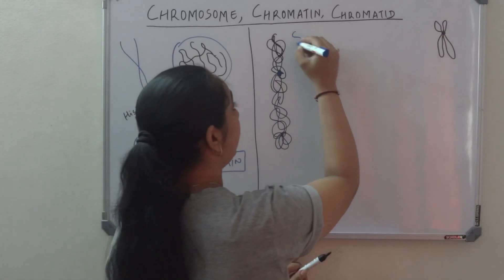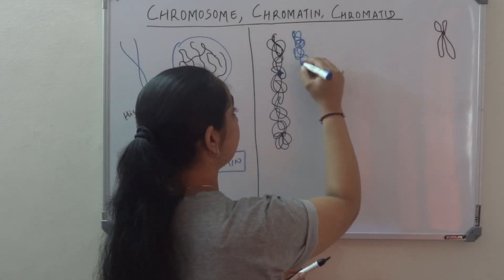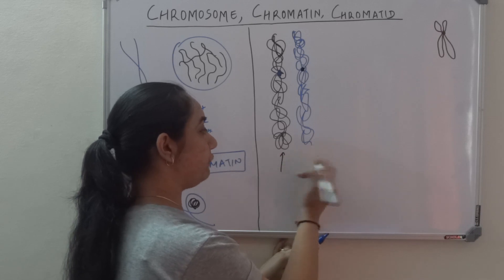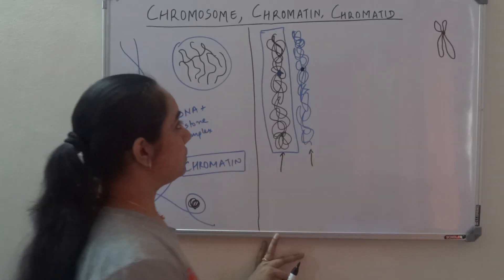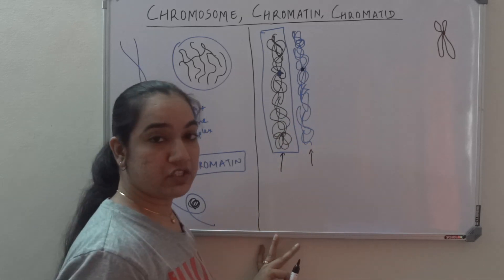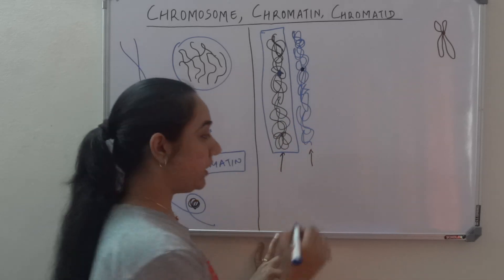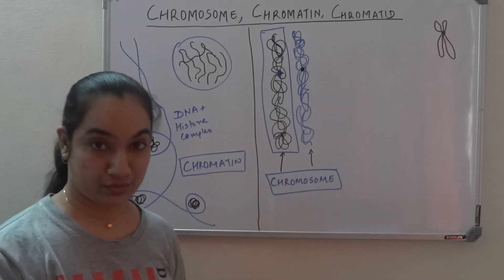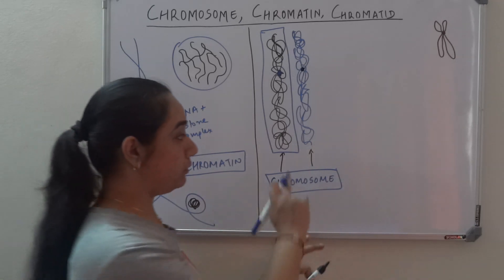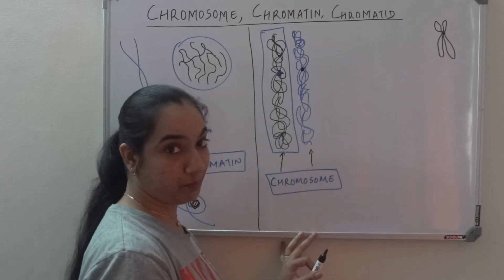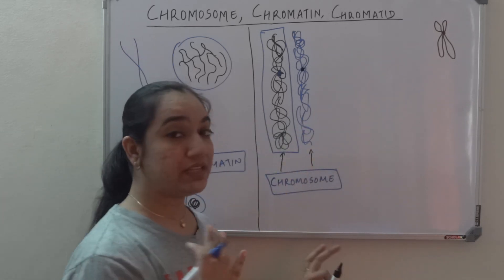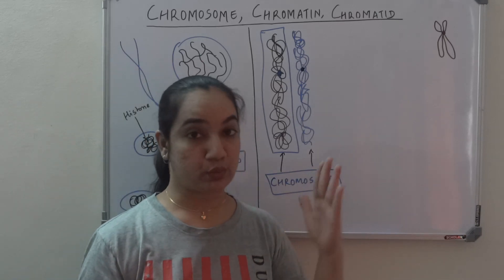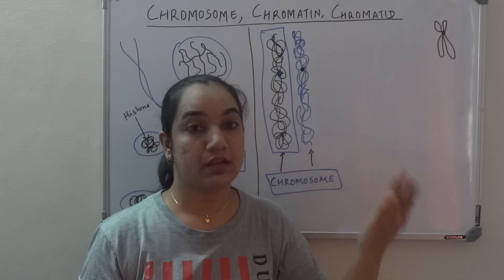We have homologous chromosomes in each pair — one coming from the mother, one coming from the father. So this is one chromosome and it will have its homologous pair. This individual unit which is the condensed form of DNA is called a chromosome. We have 23 pairs of chromosomes, this being one pair as an example.